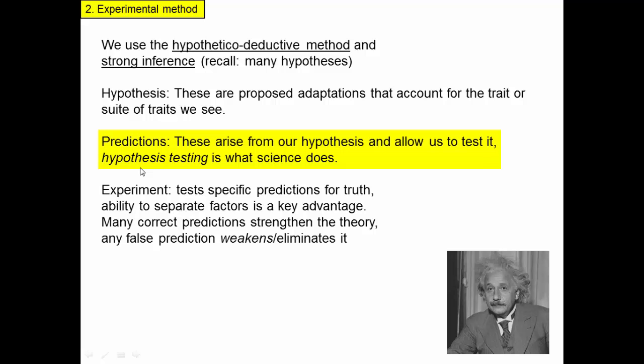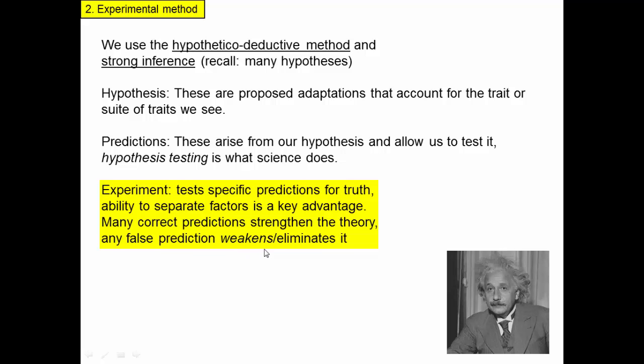Some people, if you ask them what science is, say science is hypothesis testing. We do experiments to test specific predictions for the truth. The ability to separate factors is going to be a key advantage in our experimental method. Many correct predictions strengthen a theory, while any false prediction either weakens or eliminates it. In practical matters, we don't immediately throw away a really well-supported hypothesis just because it makes one bad prediction — we recognize it is weakened and then seek to find out what's going on.